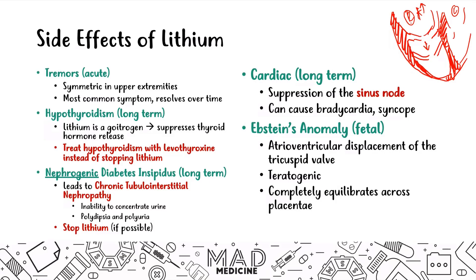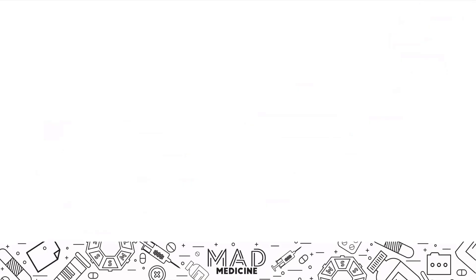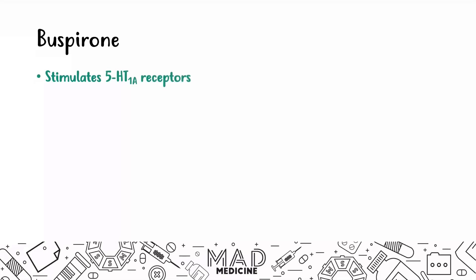That is pretty much everything you need to know about lithium — it is a very dense drug, so take your time and make sure you understand everything for Step 1. Now let's talk about our last drug: buspirone. Buspirone is a drug that's very similar to vilazodone and vortioxetine because buspirone stimulates the 5-HT1A receptors, also known as the serotonin-1A receptors.